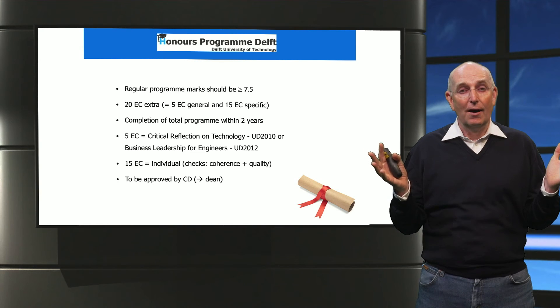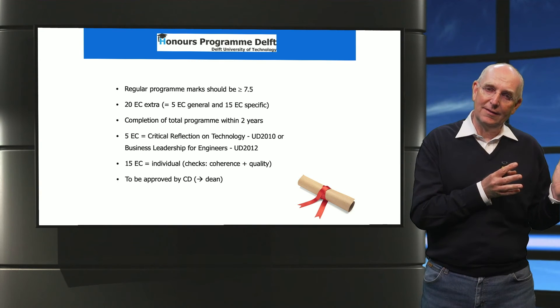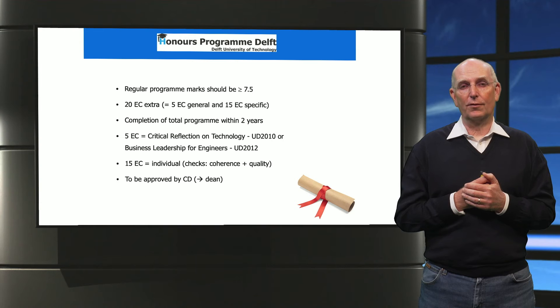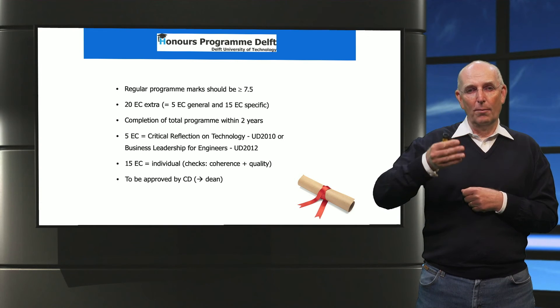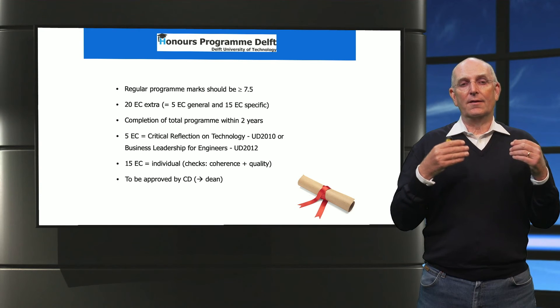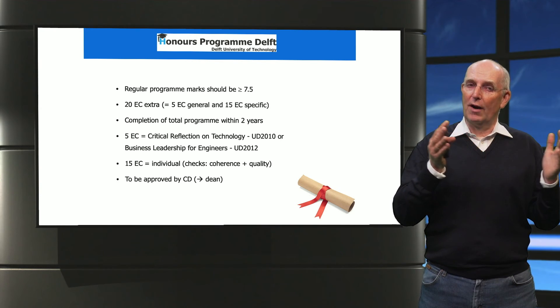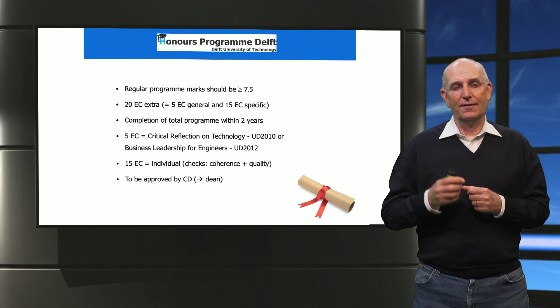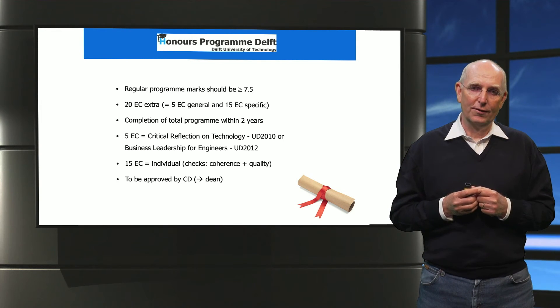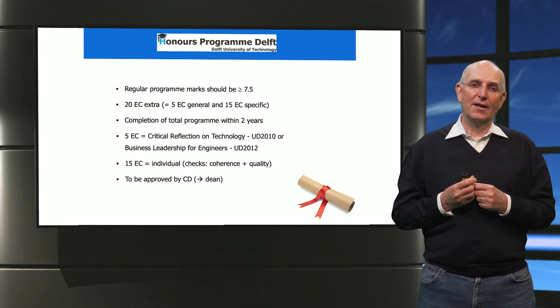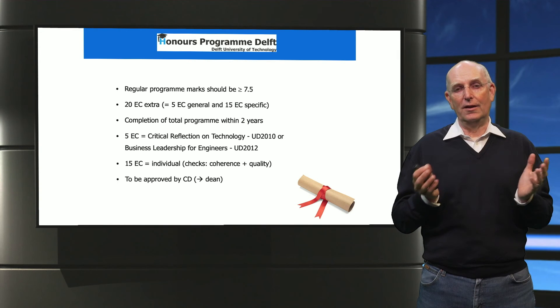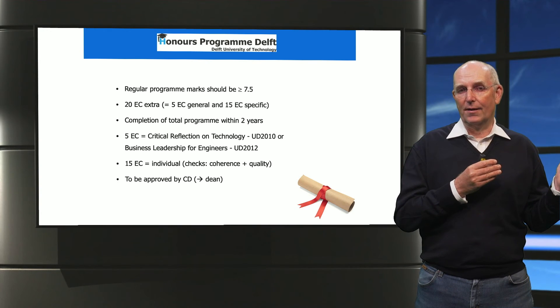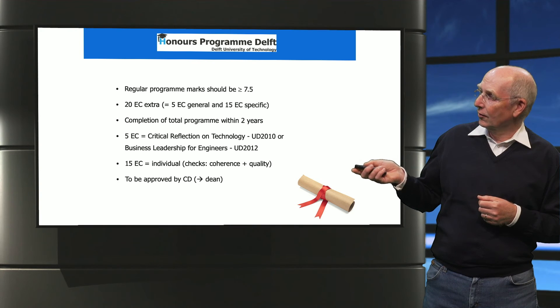Furthermore, we have the possibility, if all of this is not enough for you, that in addition to the 120 ECTS of the program you can follow an honors program. This requires that you have very good average marks of seven and a half, and then you can do on top of your normal education 20 ECTS. The 20 ECTS have to contain five ECTS on courses that are fixed by the university, which are on responsibilities of engineers and the entrepreneurship of engineers, and 15 are entirely your own choice. However, the program has to be looked at and also certified by the dean to warrant that it is of the education that it should have.